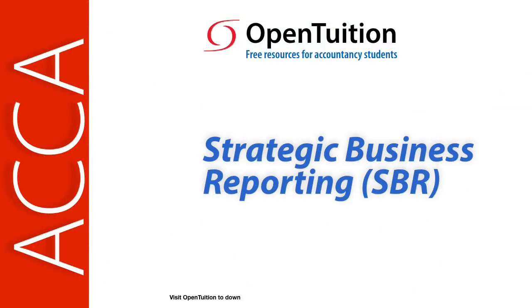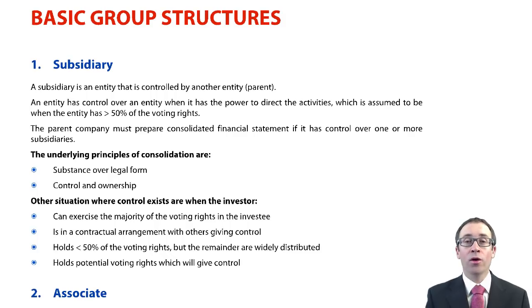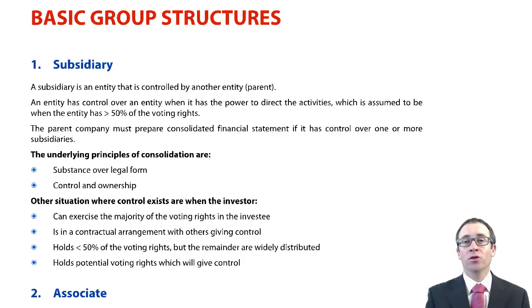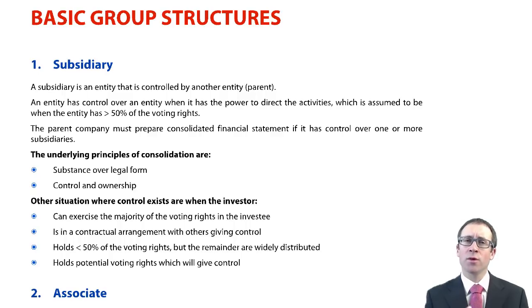This is a lecture from OpenTuition. To benefit from the lecture you should download the free lecture notes from OpenTuition.com. We're now going to go through and look at the world of group accounts. It's a fundamentally important part of the exam — it makes up at least 35 marks of question number one. Question number one is compulsory, so you really need to spend time mastering the techniques from P2 and ensuring that you have a fundamental knowledge of what you've seen previously at your F7 level.